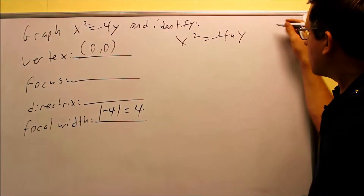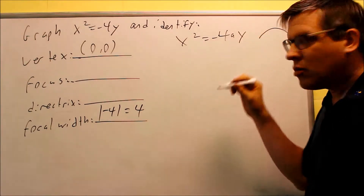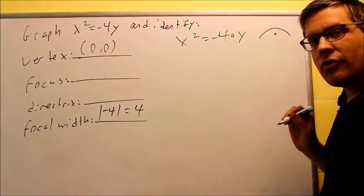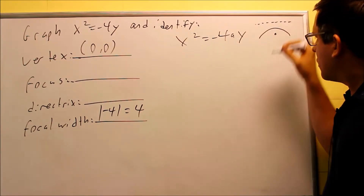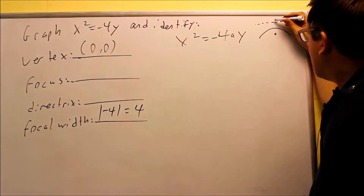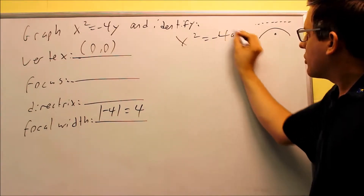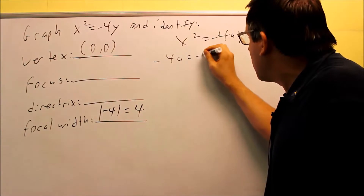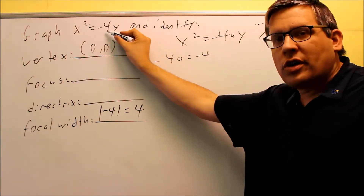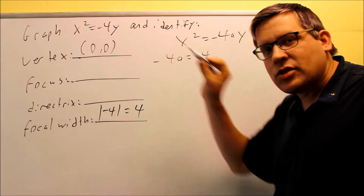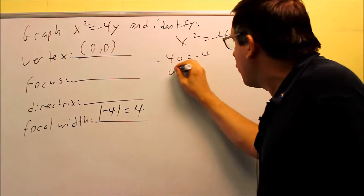Based on the pictures, this is a parabola that opens down. If x-squared comes first, it opens either up or down, and the negative means it opens down. The focus is going to be inside the parabola, and the directrix always runs behind it. Now we need to know how far up and down to go, so we've got to find the a value. We're going to take negative 4a and set it equal to negative 4. If the number in the original formula is negative, you set it equal to negative 4a; if it's positive, you set it to positive 4a. Your a should always be positive. Dividing both sides by negative 4, the a value equals 1.